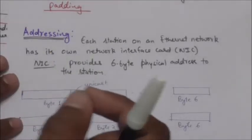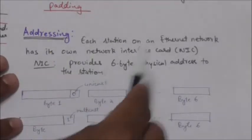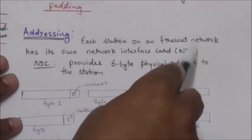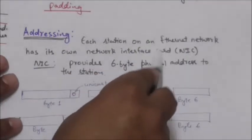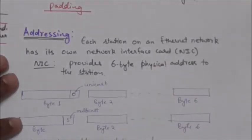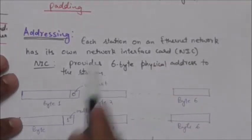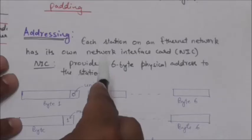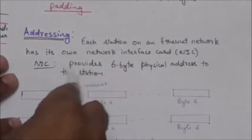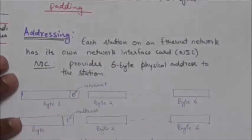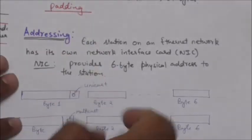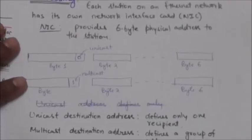Each station on the Ethernet network has its own Network Interface Card, or NIC. This NIC provides a six-byte physical address to the station, so the Ethernet address is six bytes long.